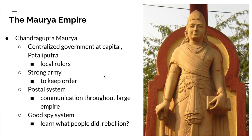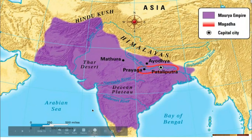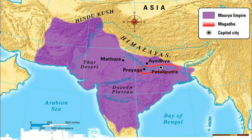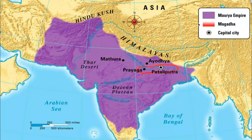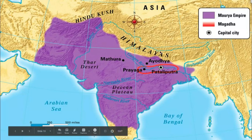Now because it's a dynasty, when he died it was passed down through his family. Here is a map — the Maurya Empire is shown in purple.